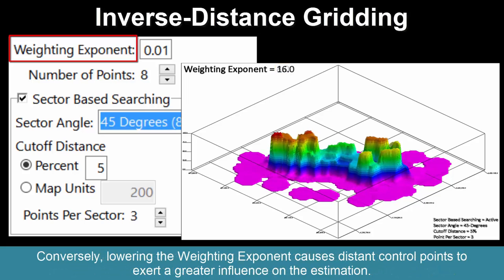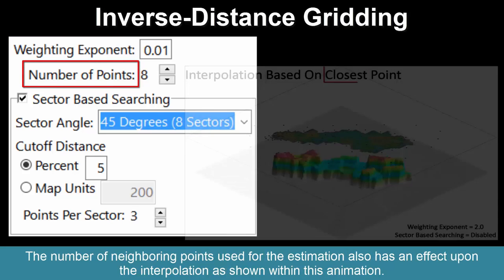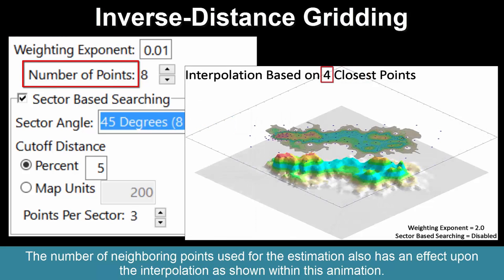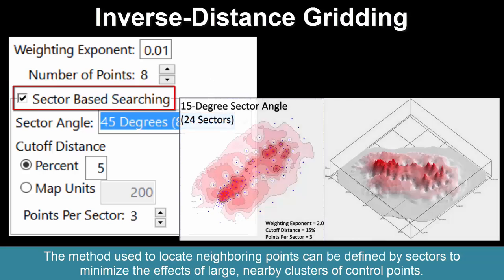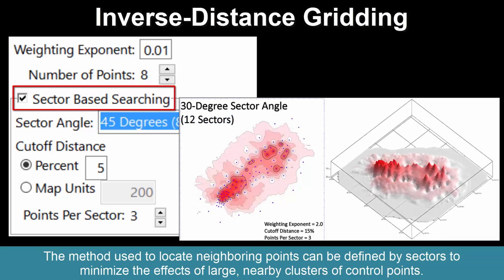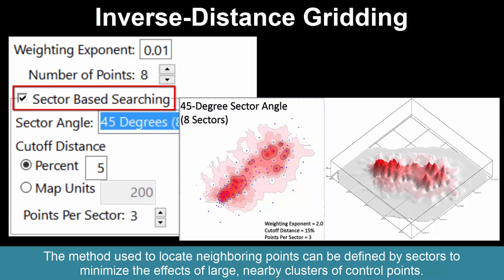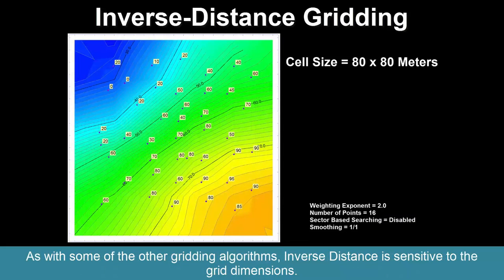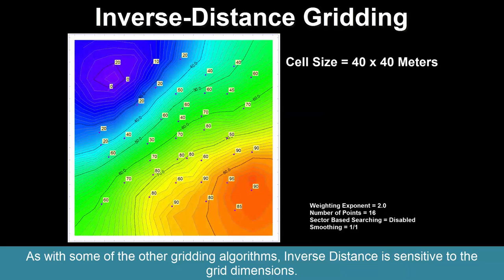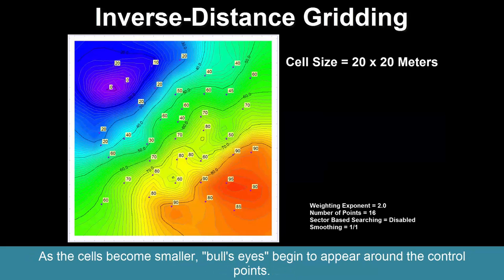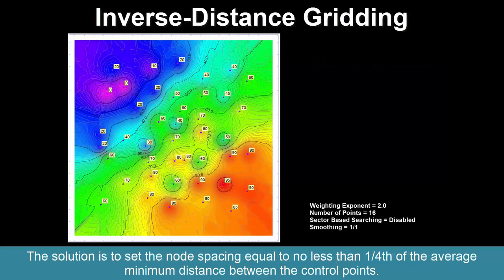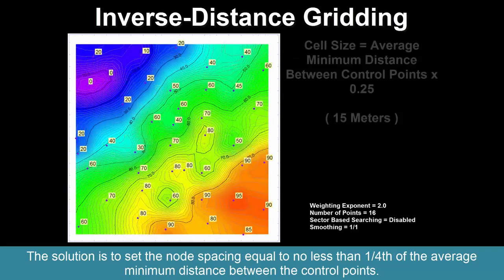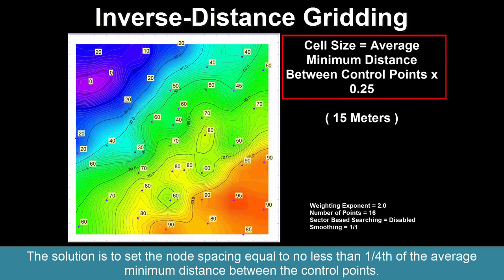Conversely, lowering the weighting exponent causes distant control points to exert a greater influence on the estimation. The number of neighboring points used for the estimation also has an effect upon the interpolation. The method used to locate neighboring points can be defined by sectors to minimize the effects of large nearby clusters of control points. As with some other gridding algorithms, inverse distance is sensitive to the grid dimensions — as the cells become smaller, bullseyes begin to appear around the control points.